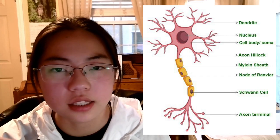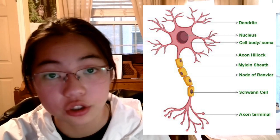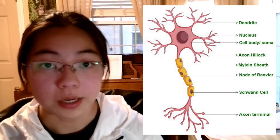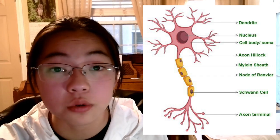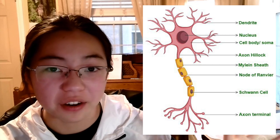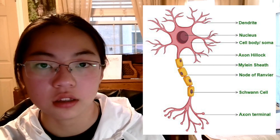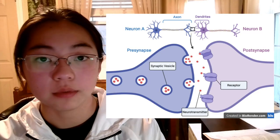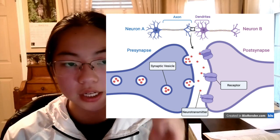You might notice on the axon there are yellow coverings — those are known as your myelin sheath, fatty coatings that provide insulation and also speed up electrical transmission. There are specific gaps between each myelin sheath called nodes of Ranvier, and their job is to also speed up transmission. Moving down to the bottom of the neuron, you see more branches — those are your terminal buttons, which are basically knobs at the end of the axons. Between each neuron there is a gap called a synapse, and that gap is always between a terminal button and the next adjacent neuron's dendrite.